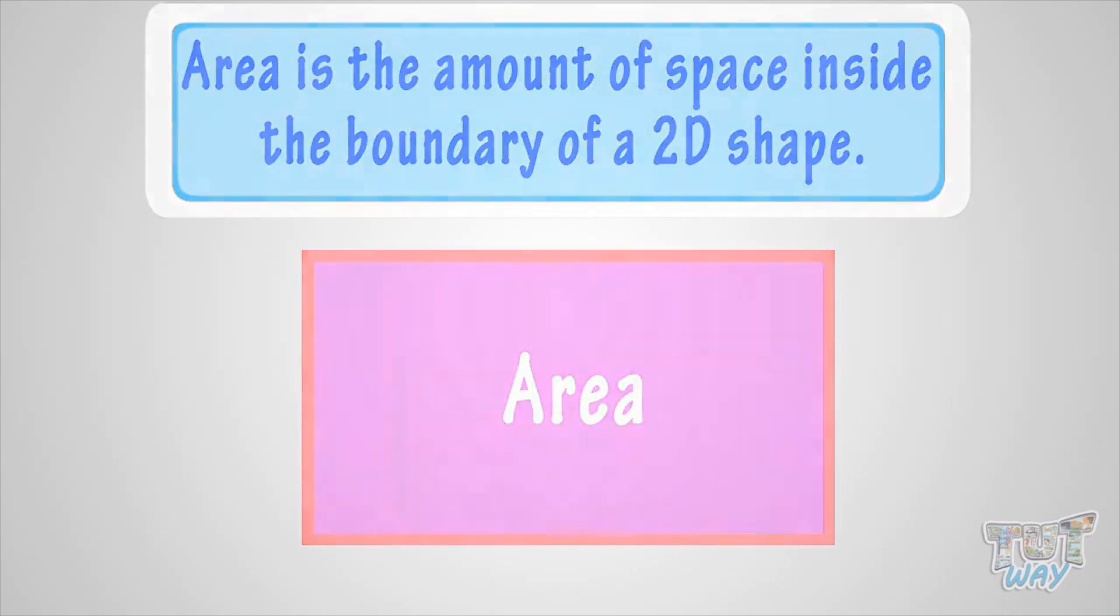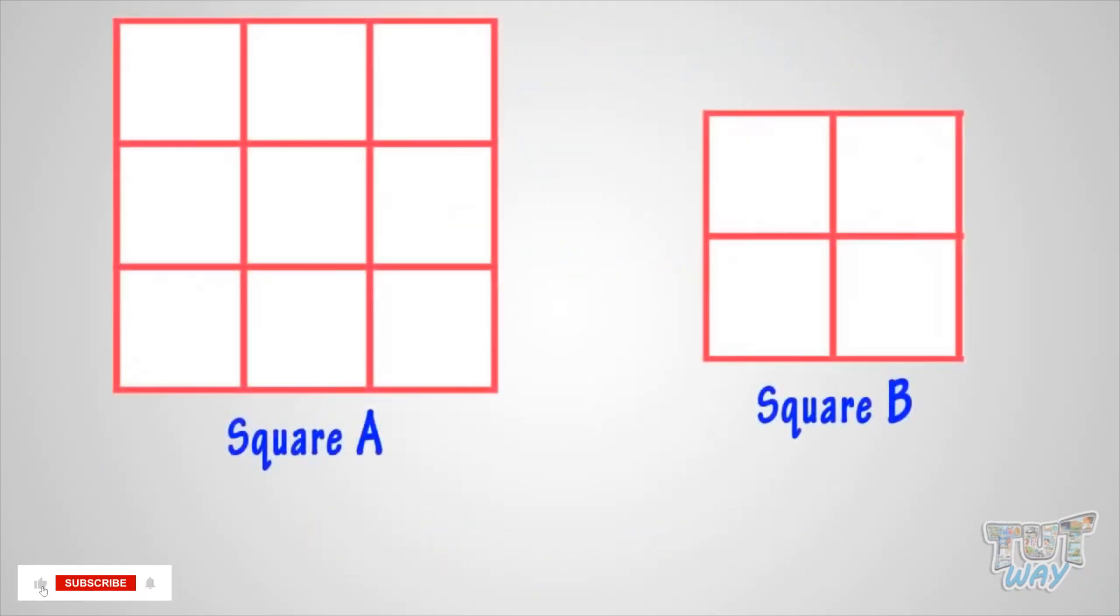See the figure. Here, area of the square A is the number of squares in it.